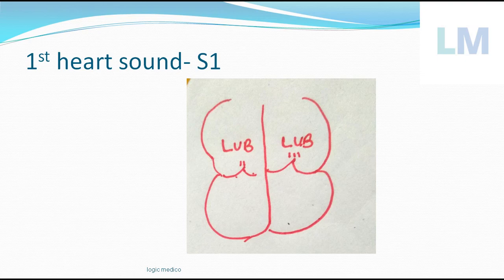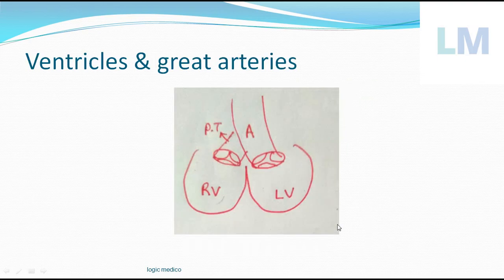The first heart sound is the closure of the atrioventricular valves, producing a sound called 'lub'. Where do you hear this most clearly? Near the xiphisternal junction for the tricuspid valve - this is the right side. On the left side, you hear it in the fifth intercostal space just within the mid-clavicular line, because the bicuspid valve is closer to that region.